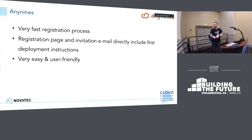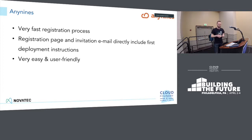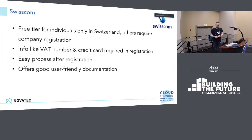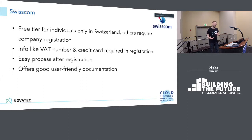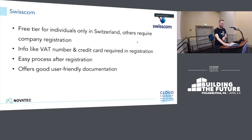Anynines has a really fast registration process, and even in the registration page and invitation email you get your CF push instructions straight away — making it the fastest application-to-platform experience we had. Very easy and user-friendly. Swisscom is another alternative based in Europe. The difference we found is the free tier is only available for individuals in Switzerland; others require company registration to get the free tier. After registration the experience is the same — good, friendly documentation and a very positive experience.